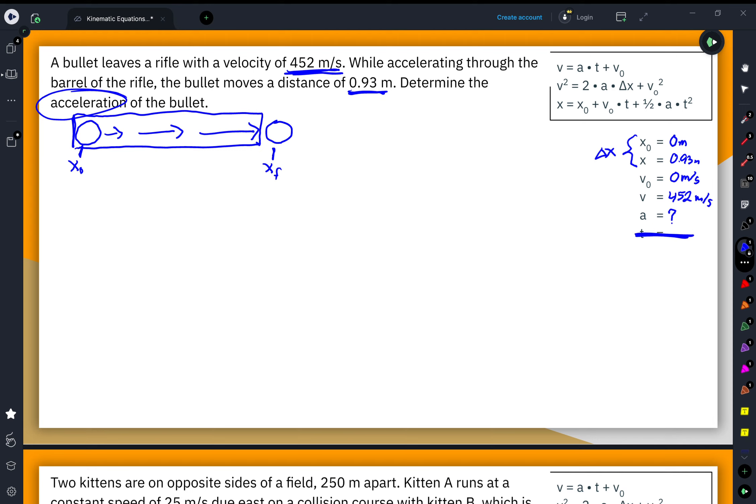Now I just need to select an equation. I only have one equation without time in it. That's going to be my v squared equals 2a delta x plus v naught squared equation. I do know the final velocity, the displacement, and the starting velocity. So it has all the variables that I know as well as the acceleration that I'm solving for. So this equation will end up working.